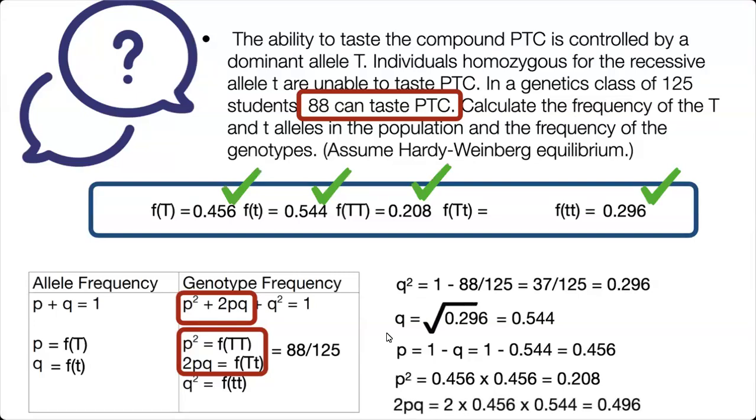And then we can do 2 times P times Q to find the frequency of our heterozygote.